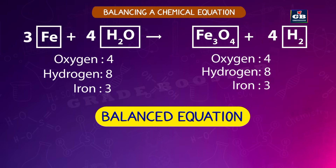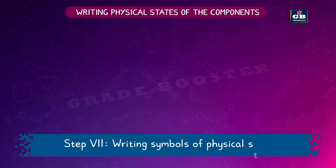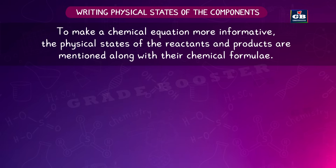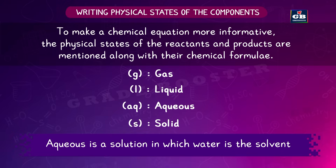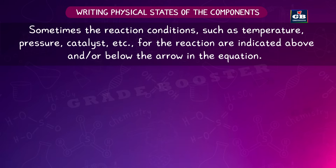Step six: count atoms on both sides to confirm the equation is balanced. This method is called the hit and trial method. Step seven: write symbols of physical states to make the equation more informative. Gaseous, liquid, aqueous, and solid states are represented by (g), (l), (aq), and (s) respectively. Aqueous means a solution in which water is the solvent. Reaction conditions such as temperature, pressure, and catalyst are indicated above or below the arrow.